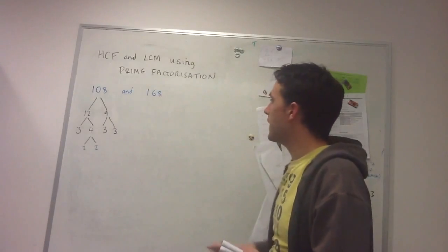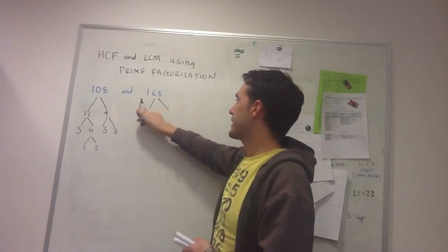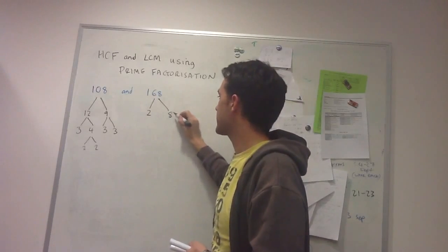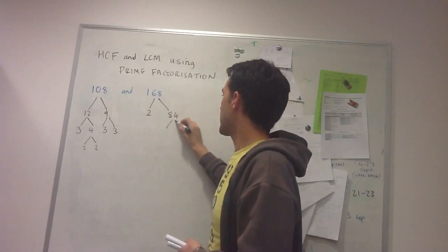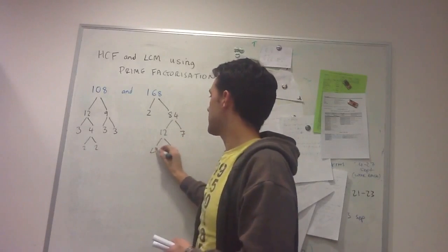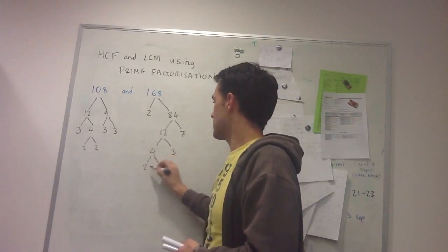And then with 168 I can start by - maybe I know that it's even so I'll do 2, and I can see that half of that is 84. And then for 84 I've got 12 times 7, and 12 again goes into 4 times 3 and 2 times 2.